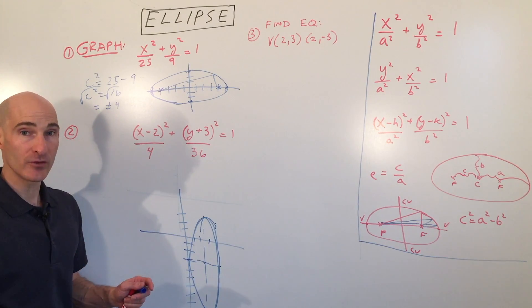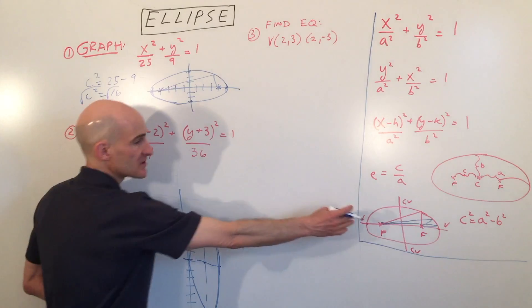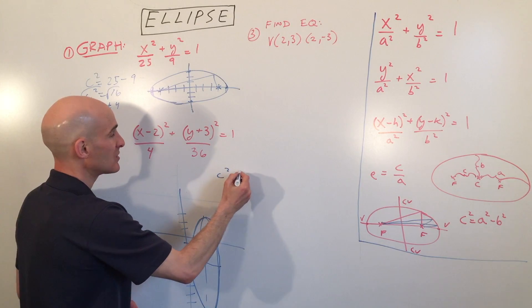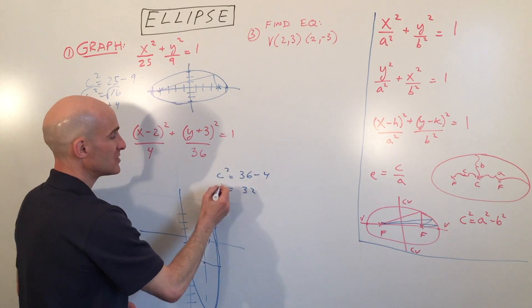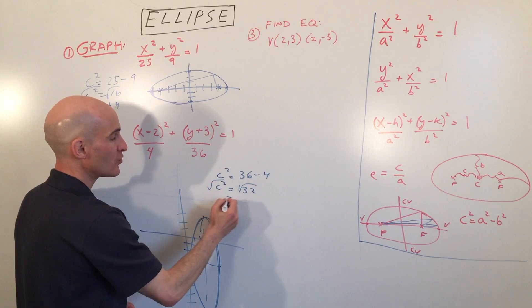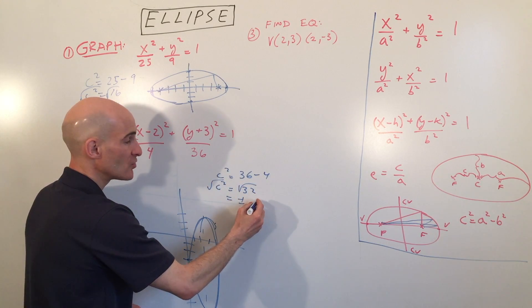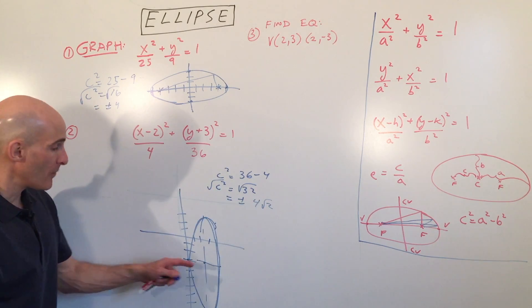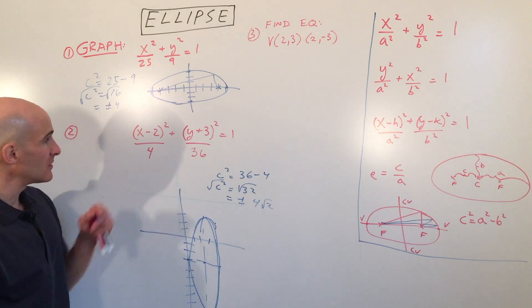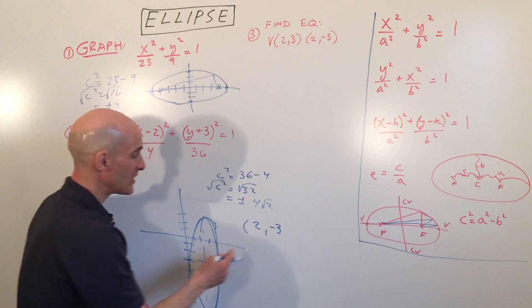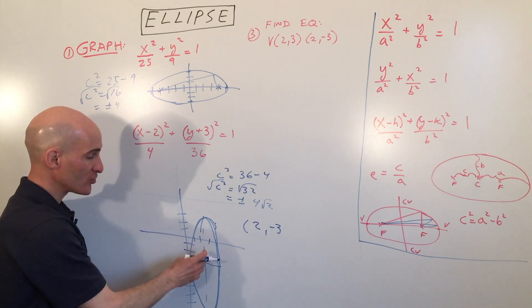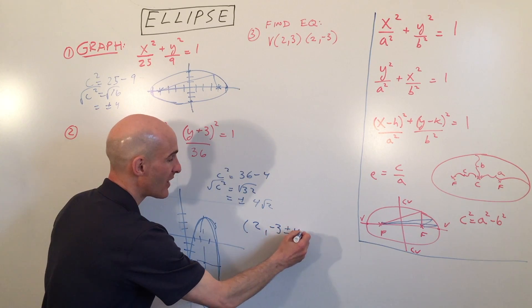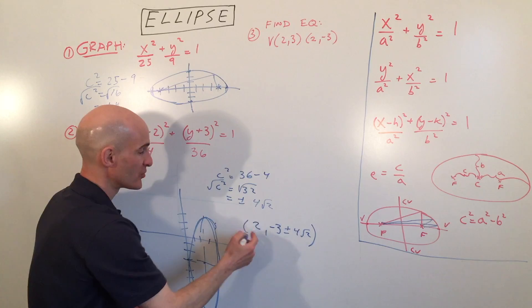To find the foci, we use c squared equals a squared minus b squared, where a squared is the larger denominator, giving c squared equals 32. The square root of 32 is four root two, since 16 times 2 equals 32. Since the ellipse is elongated vertically, we add and subtract four root two from the y-coordinate of the center, giving foci at (2, negative 3 plus or minus four root two).